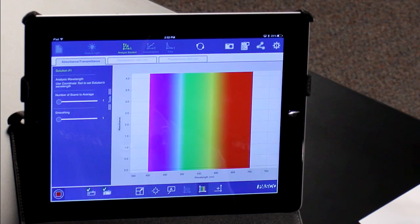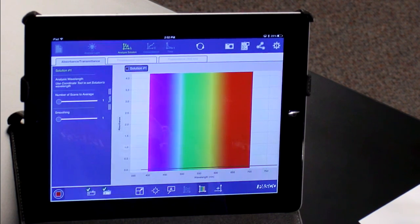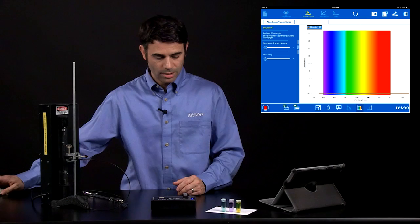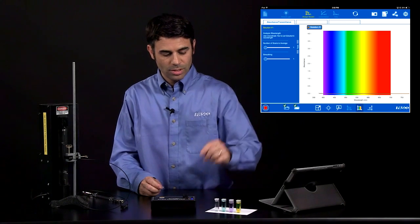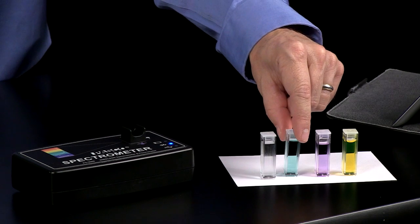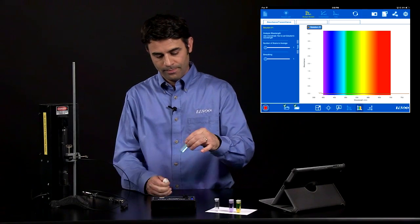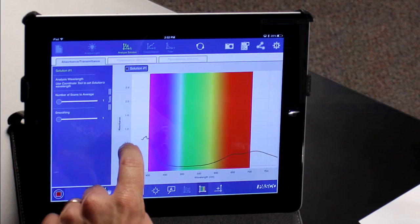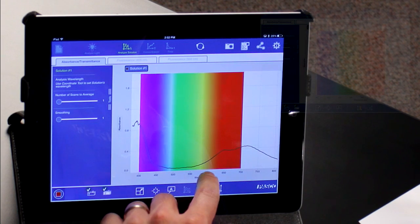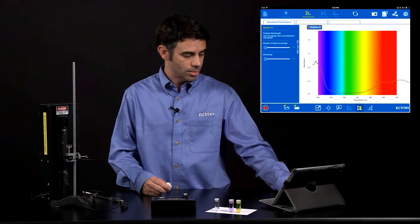If I hit start right now, then I should see an absorbance of zero because I have successfully blanked this solvent. So now if I put some solutions in there where there are colored solutes, we should see a difference in the spectra. I'm going to wipe down my cuvettes to make sure there's no smudges, and there's a nickel-2-nitrate spectra. I'll stop that.